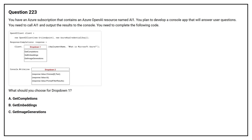Question number 223. You have an Azure subscription that contains an Azure OpenAI resource named AI1. You plan to develop a console app that will answer user questions. You need to call AI1 and output the result to the console. What should you choose for drop-down 1? Option A: get_completions. Option B: get_embeddings. Option C: get_image_generations. The correct answer is Option A, get_completions.